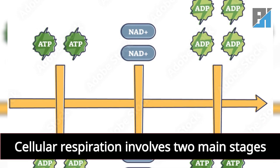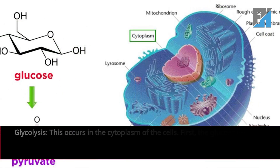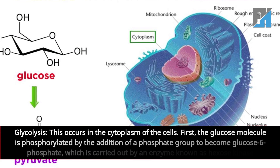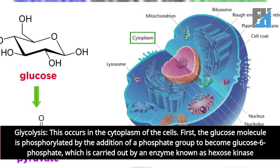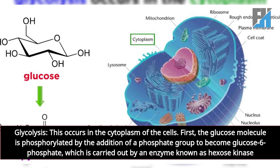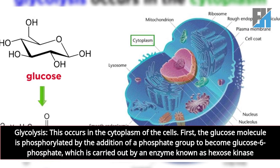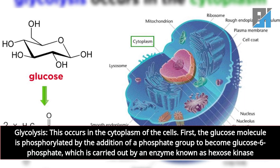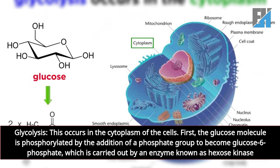Cellular respiration involves two main stages. The first is glycolysis, which occurs in the cytoplasm of the cells. The glucose molecule is phosphorylated by the addition of a phosphate group to become glucose-6-phosphate, which is carried out by an enzyme known as hexose kinase.